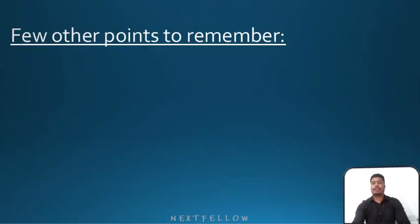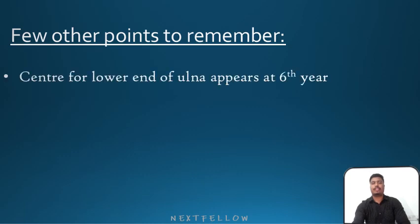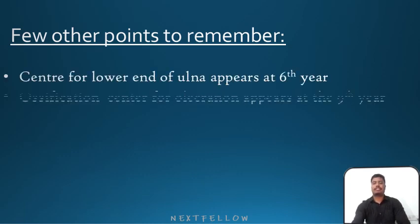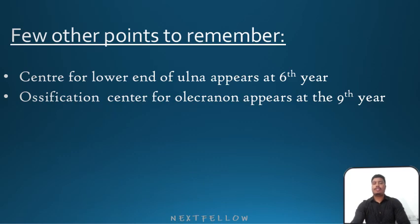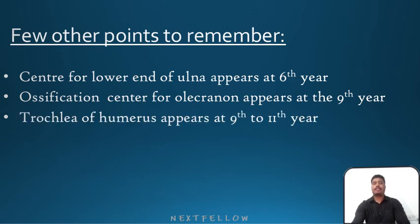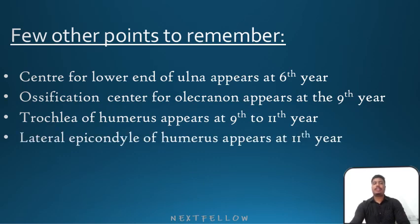A few other points to remember for age estimation from 6 to 12 years: the ossification center for the lower end of ulna appears at the sixth year; the ossification center for the olecranon appears at the ninth year; the trochlea of humerus appears at the ninth to eleventh year; and the lateral epicondyle of humerus appears at the eleventh year.